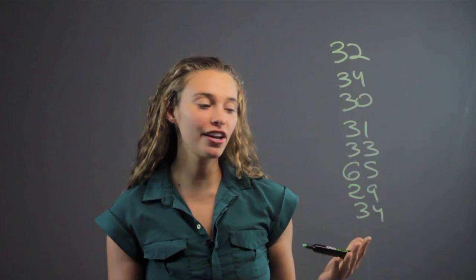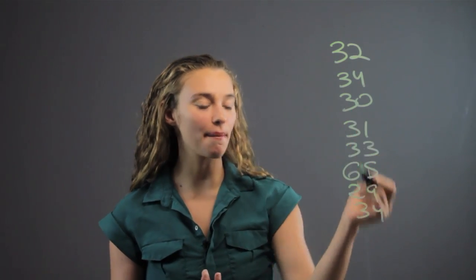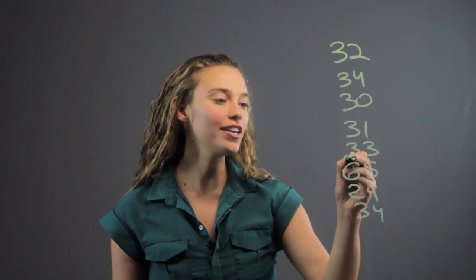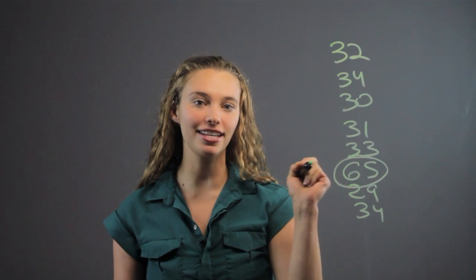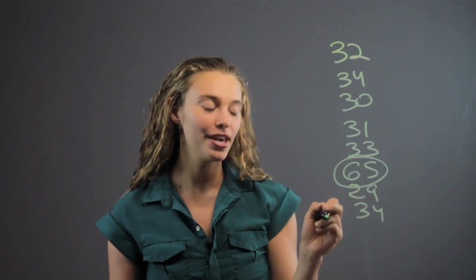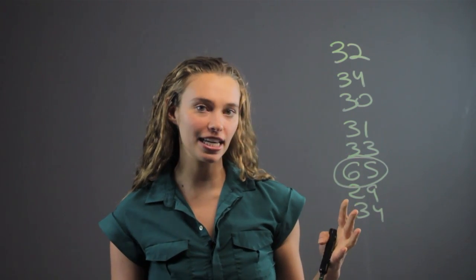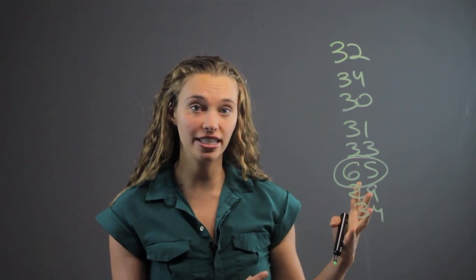The fourth graders now have to identify which number here is the outlier. Obviously 65 is the one that doesn't belong.